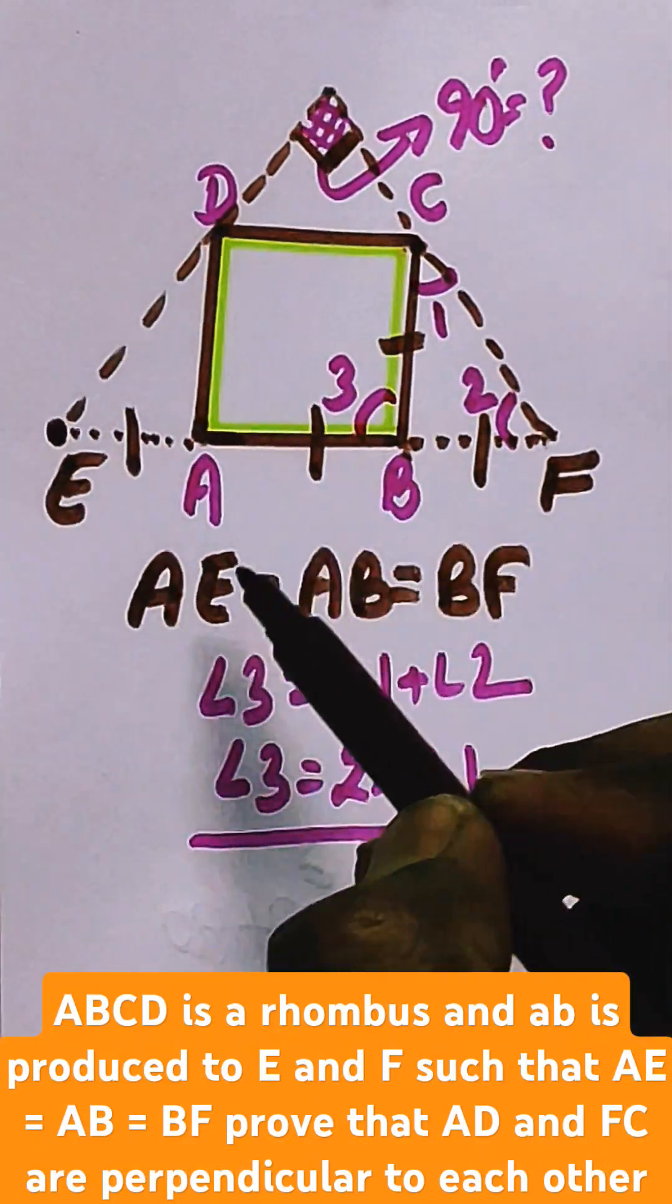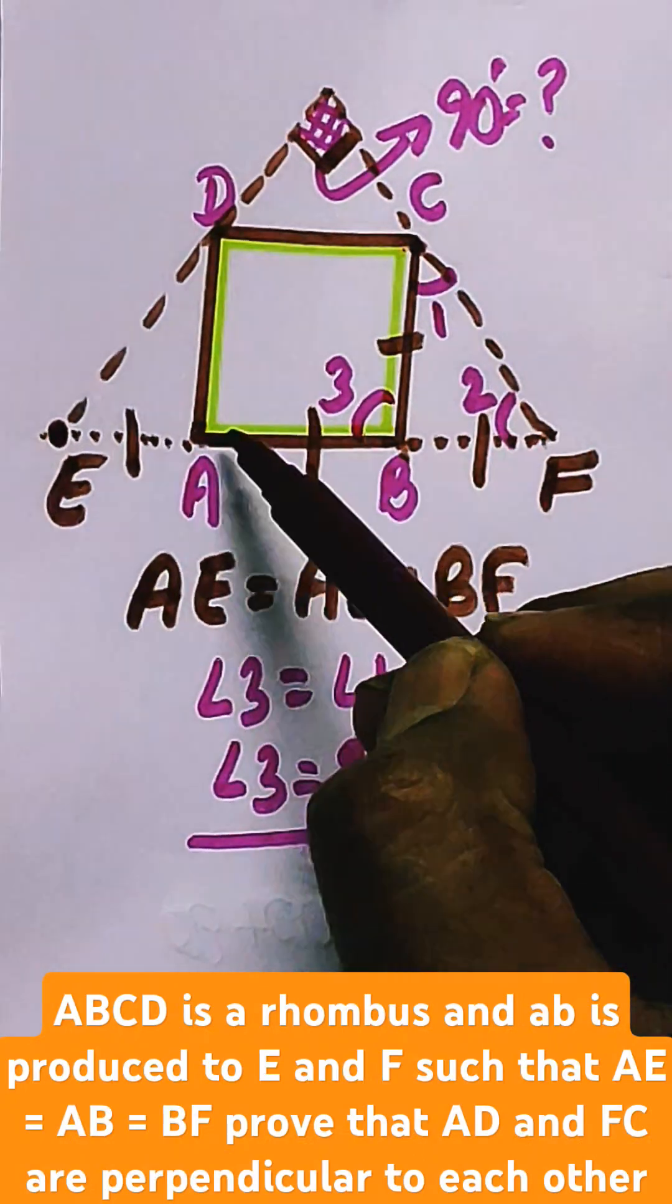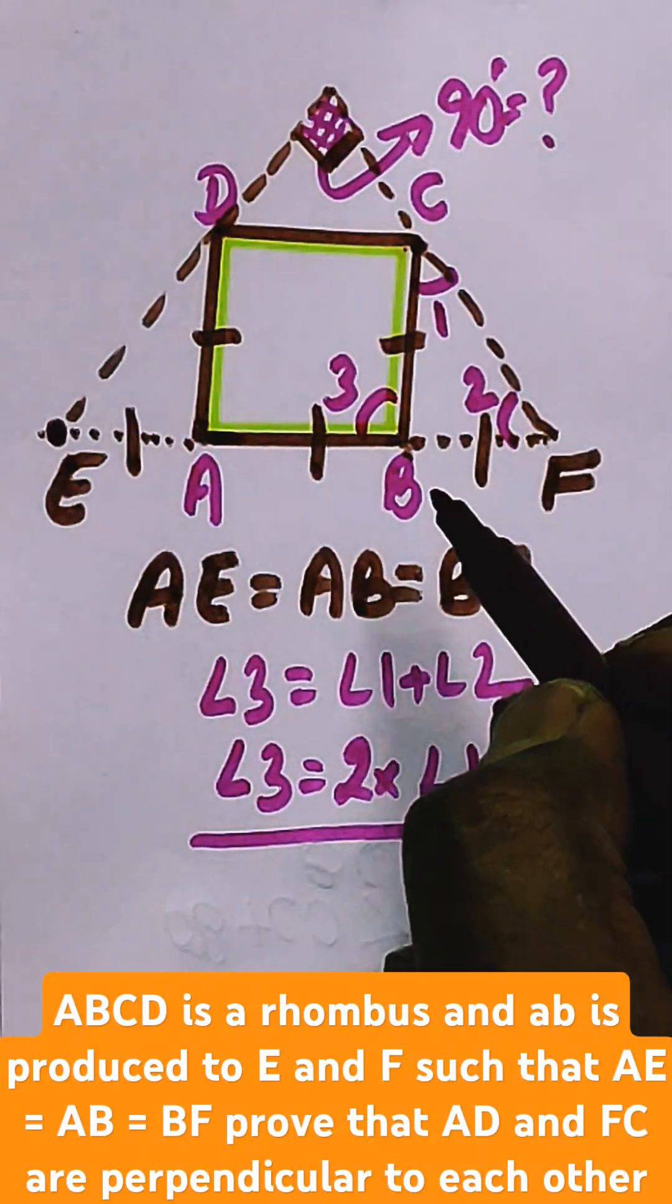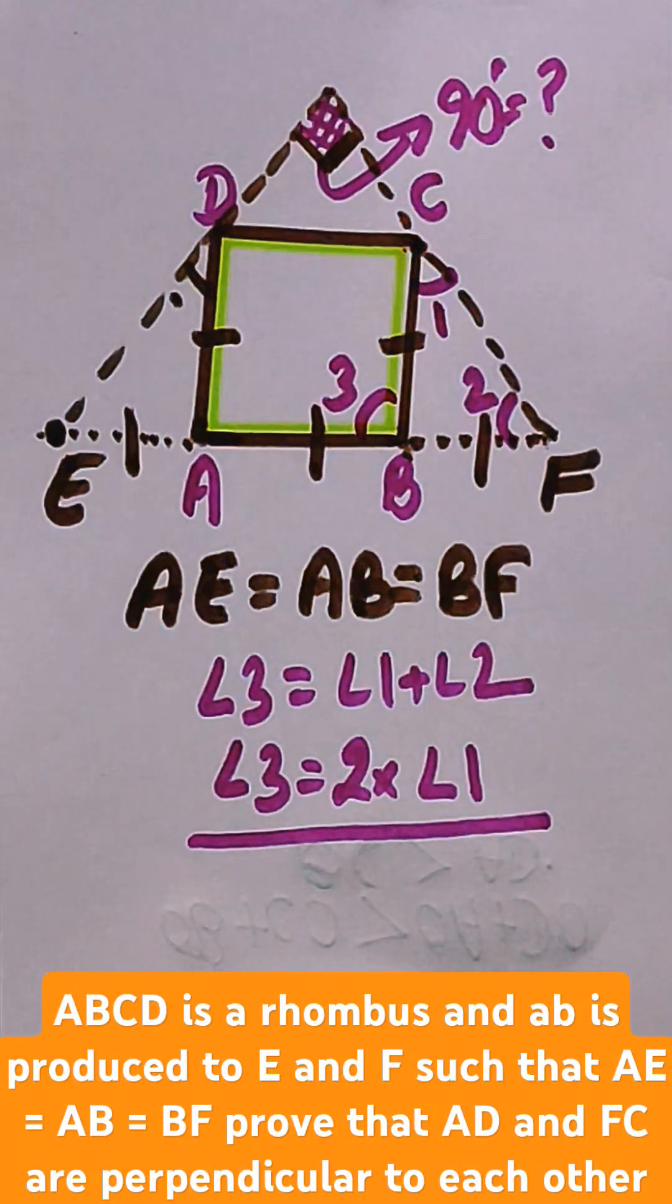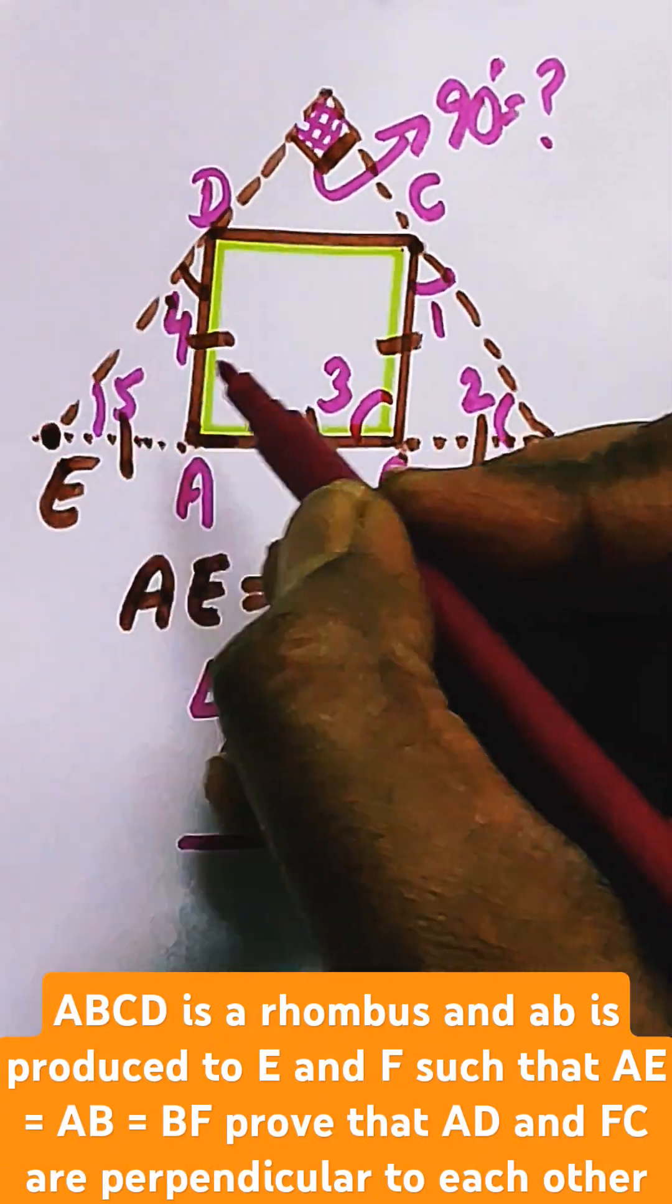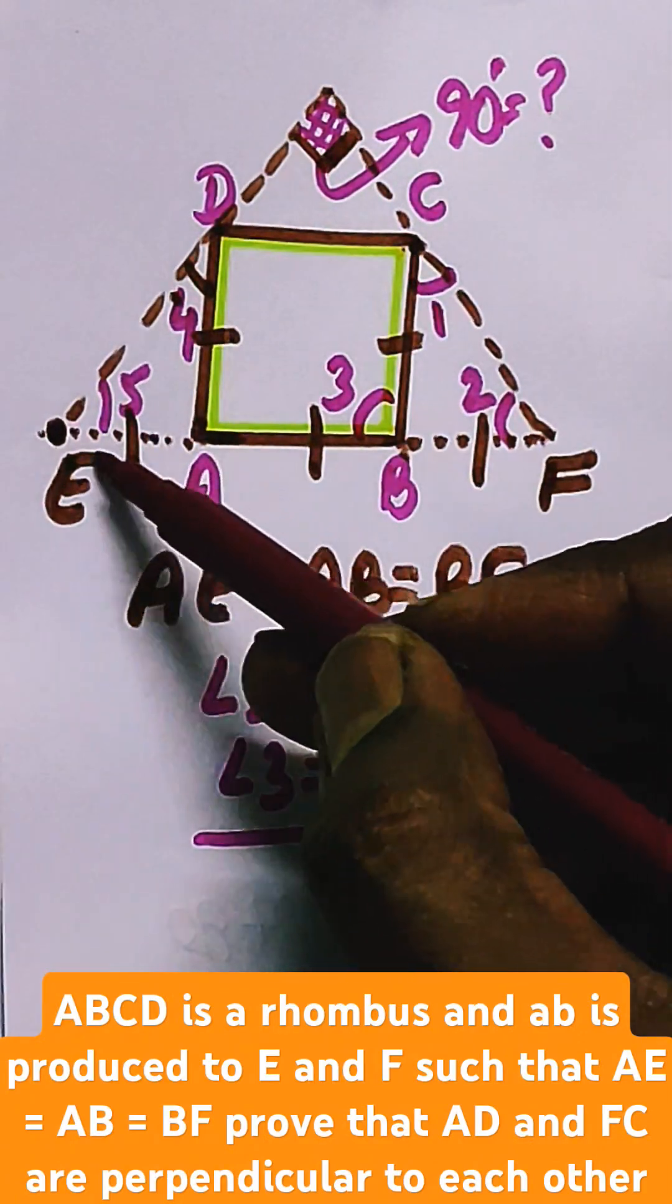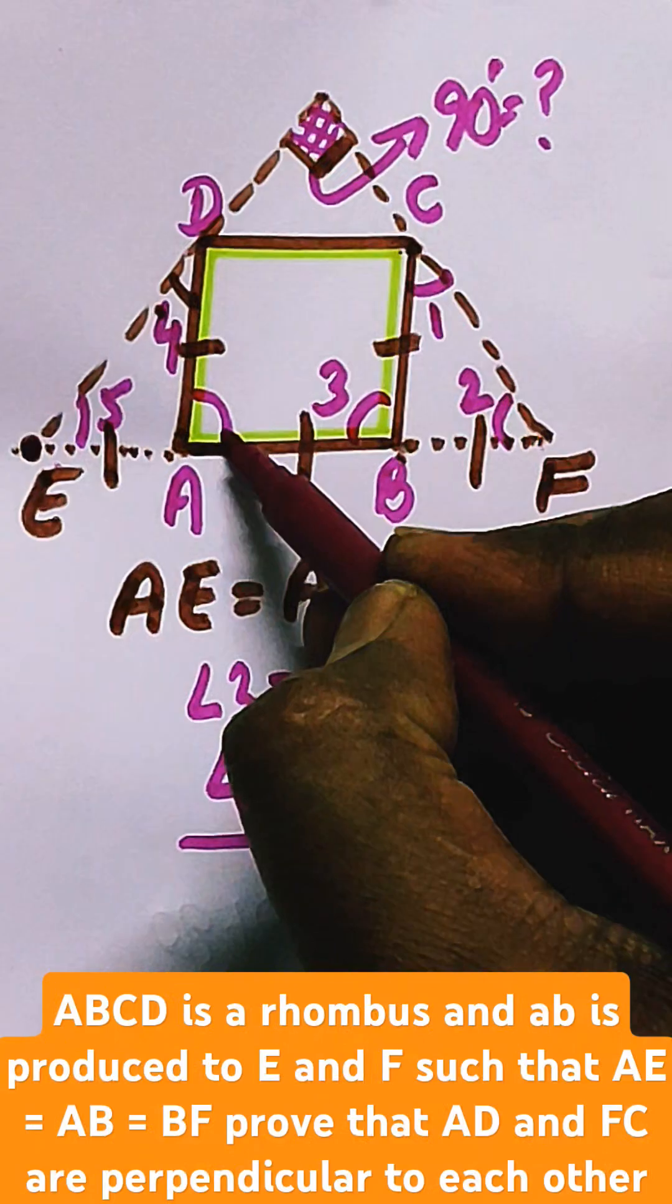Similarly, AB is equal to AE as given to you, and AB is equal to AD, which is a side of the rhombus. So we can say angle 4 and angle 5 are equal, being angles opposite to the equal sides AE and AD.